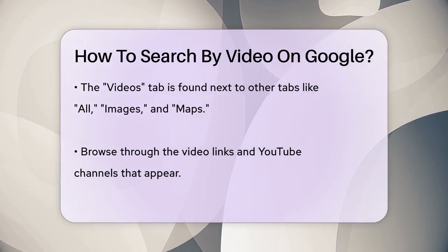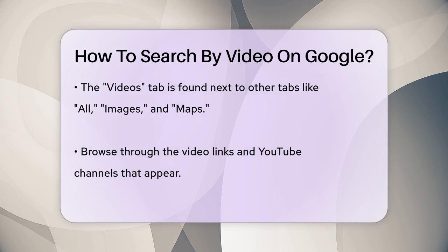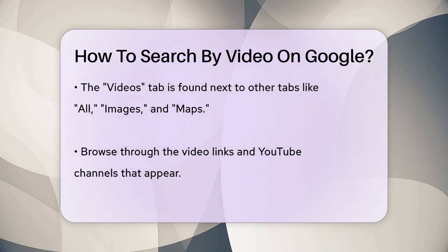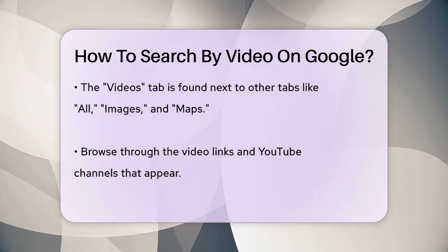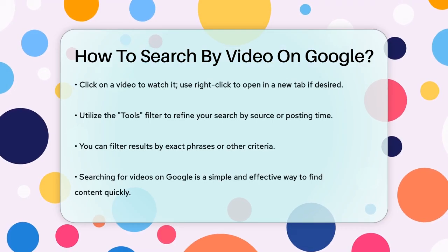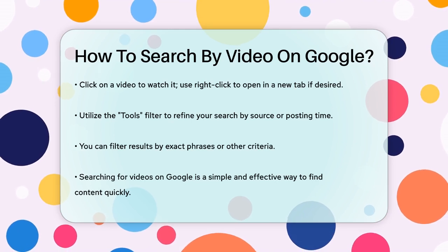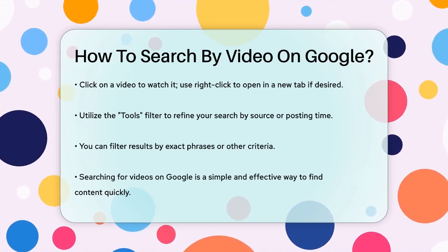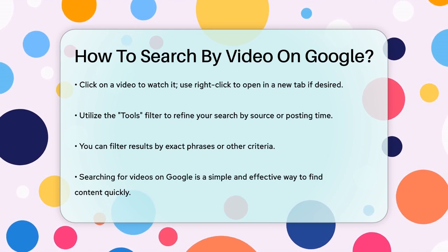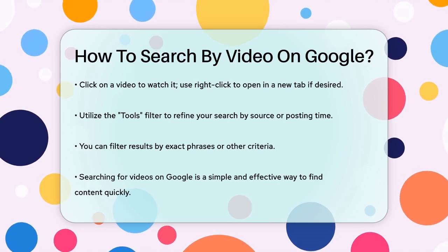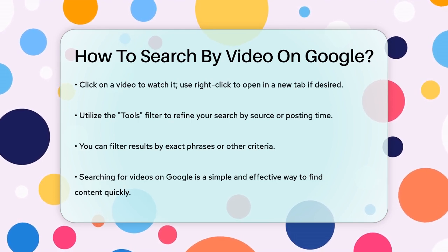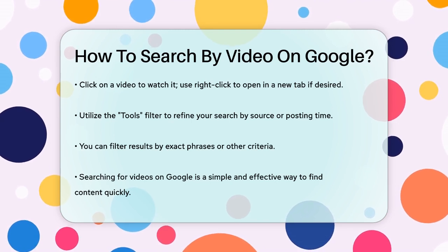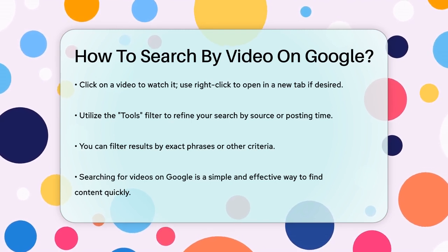If you're looking for videos from a specific source, like YouTube or another video platform, you can use the Tools filter to refine your search. For instance, you can filter results by the time they were posted or by the exact phrase you searched for. Searching for videos on Google is a straightforward process that can help you find exactly what you're looking for quickly and efficiently.